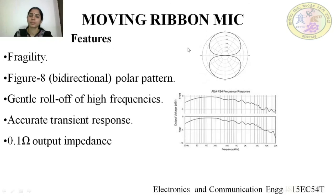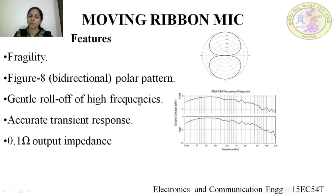Features of moving ribbon microphones: they are highly fragile due to the delicate ribbon placed inside the permanent magnet. These microphones have a figure-of-eight or bi-directional polar pattern, meaning they are very sensitive to sound coming from front and rear directions. Moving ribbon microphone has a gentle roll-off of high frequencies — that is, these mics are sensitive to low frequencies compared to high frequencies. Moving ribbon microphones have accurate transient response and can even sense the moment of sound waves. The output impedance of a moving ribbon mic is 0.1 ohm.